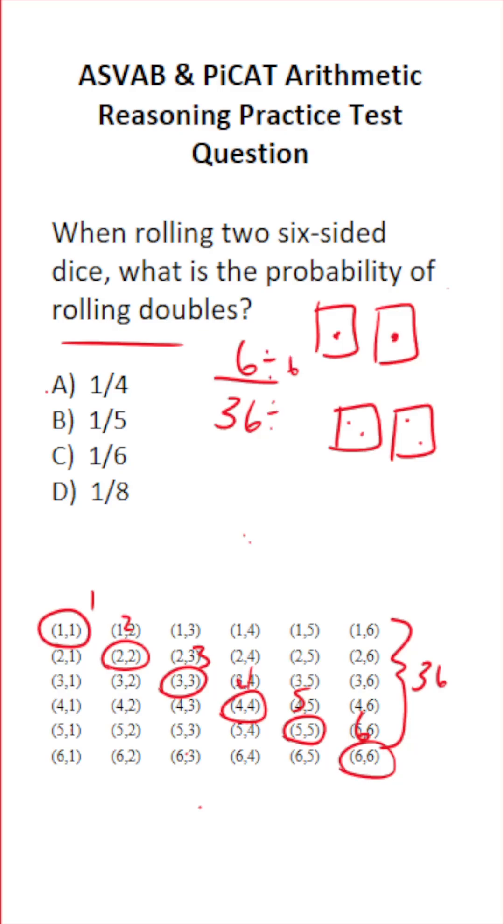which we can reduce by a common factor of 6. 6 divided by 6 is 1, 36 divided by 6 is 6. So the probability of rolling doubles is 1/6.